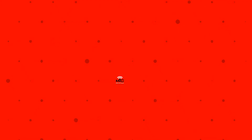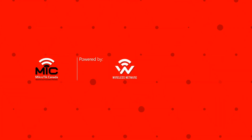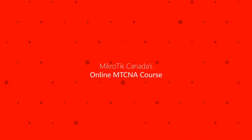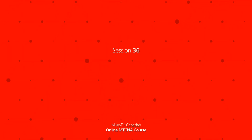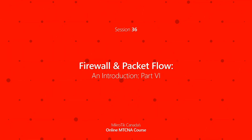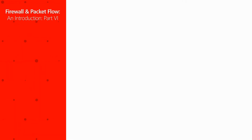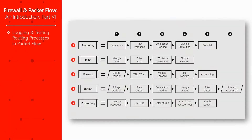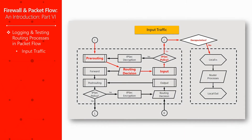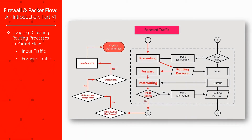Hello everyone, we hope you're doing well. Today we're bringing you episode 36, the sixth introductory episode to Firewall. We'll be testing the five main processes of the routing flow based on the three main types of expected traffic: namely input, forward, and output.